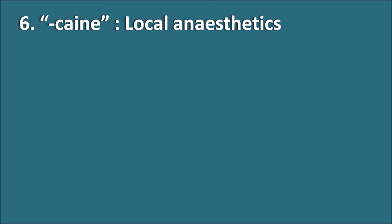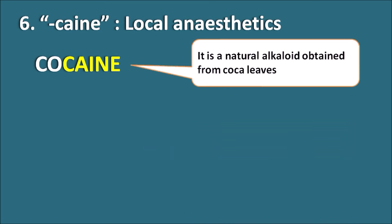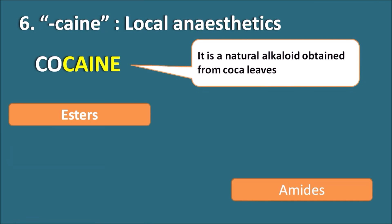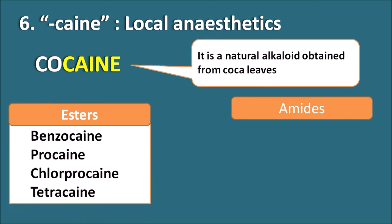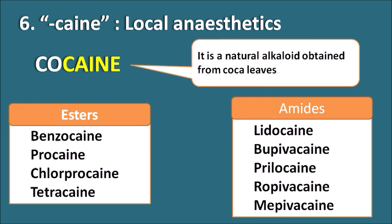Sixth, the suffix '-caine' indicates they are local anesthetics. Cocaine is a natural alkaloid obtained from coca leaves. Synthetic local anesthetics are classified into esters and amides. Esters include Benzocaine, Procaine, Chloroprocaine, and Tetracaine. Amides include Lidocaine, Bupivacaine, Prilocaine, Ropivacaine, and Mepivacaine. Whether the drug has an ester linkage or amide linkage, all share the same suffix '-caine', indicating they are local anesthetics.